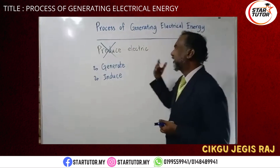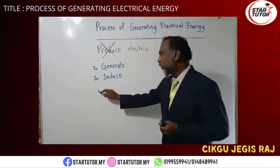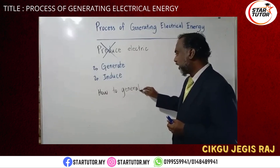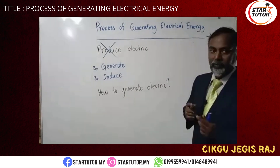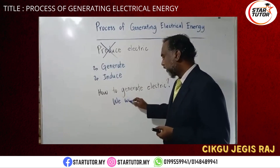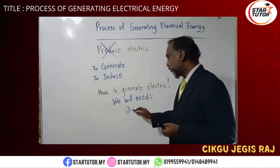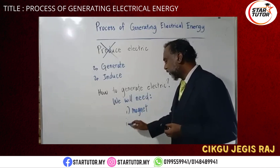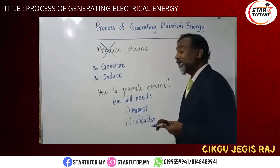Now, how do we generate electricity? Simple. You will need a magnet — a permanent magnet. And a conductor. A conductor can be as simple as a wire.